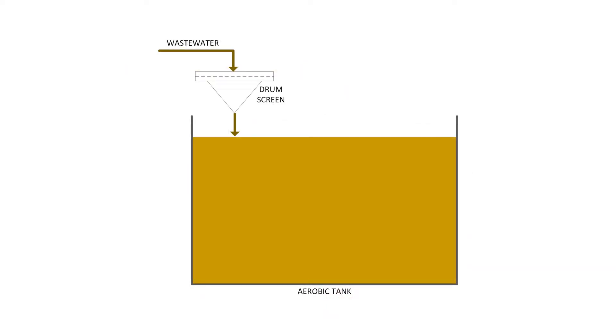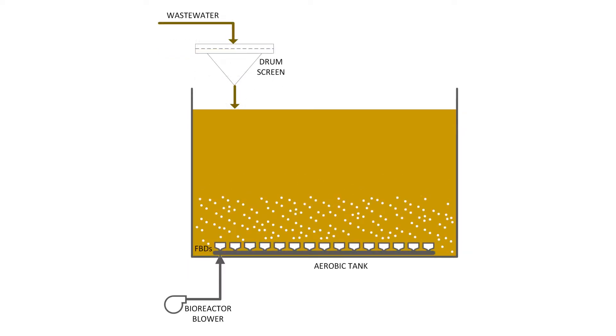From there, the pre-screened water gets introduced into a bioreactor where microorganisms decompose organic contents and achieve complete nitrification under controlled operating conditions. During this step, air is also introduced into the bioreactor tank through fine-bubble diffusers to provide oxygen required for biomass growth.